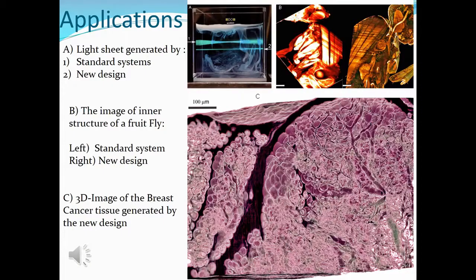A comparison between the light sheet provided by a standard system and our new design is presented in image A. The images of the biological sample — fruit fly — done by the left one are from the standard system, and the right one is from our new design. Most importantly, the cancerous tissue, which is a large sample, is imaged by our new system, providing very high resolution images.